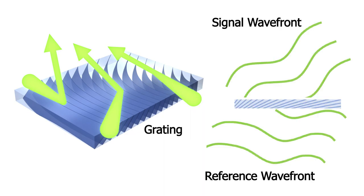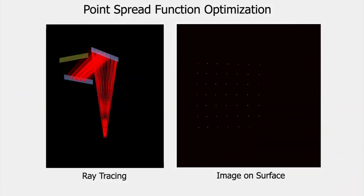This grating is recorded by interfering a reference and a signal wavefront on the HOE, and computing these recording wavefronts is a challenging task. Much like traditional freeform refractive optics, HOEs can be optimized toward a given objective.